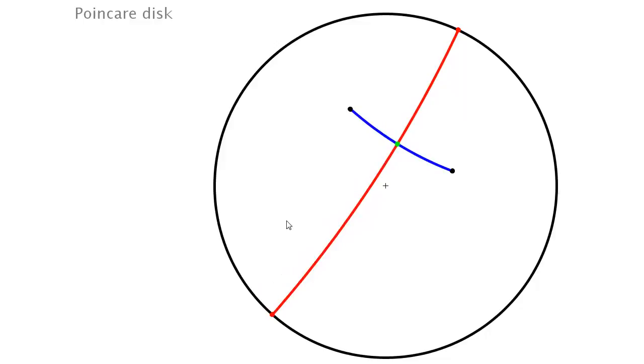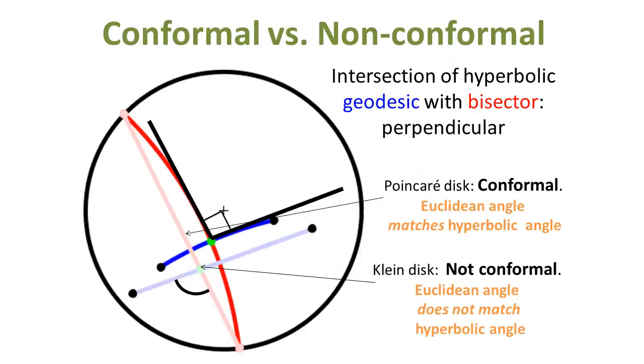A conformal model preserves angles. That is, Euclidean angles measured in the model coincide with the hyperbolic angles. The hyperbolic bisector is perpendicular to the hyperbolic line segment. This is checked in the Poincaré conformal model.